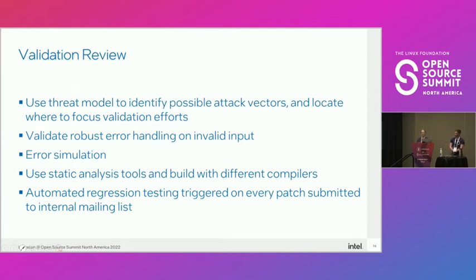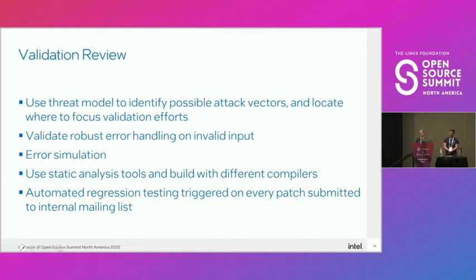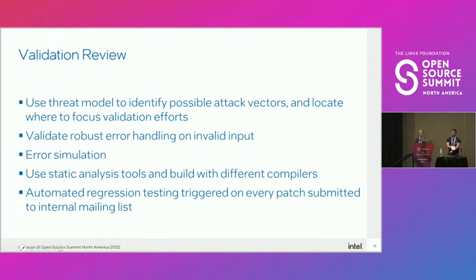For the validation review, we used the threat model to identify possible attack vectors and focus our validation efforts. We made sure we had robust error handling for invalid input. We ran static analysis tools on all our code and built with different compilers — GCC and Clang — with -W=1 warnings enabled for both to pick up and address warnings. We run checkpatch with the --strict option. We also have servers in Intel that, when a patch is sent to the internal mailing list, automatically run a regression build and report any regression issues.